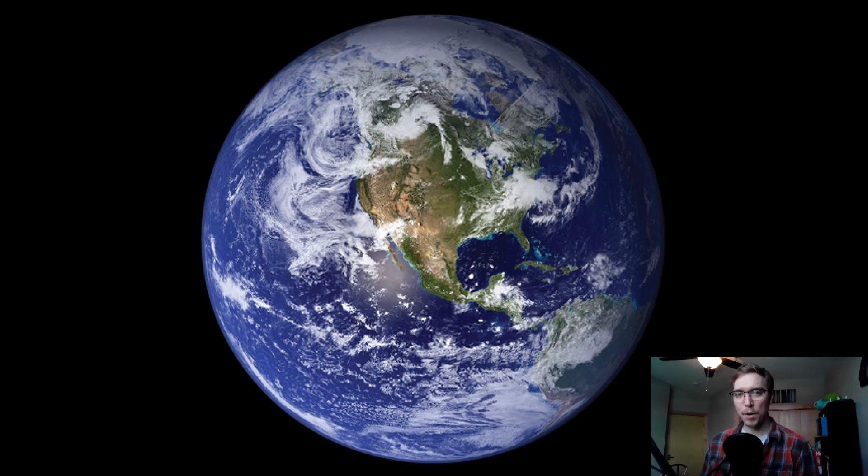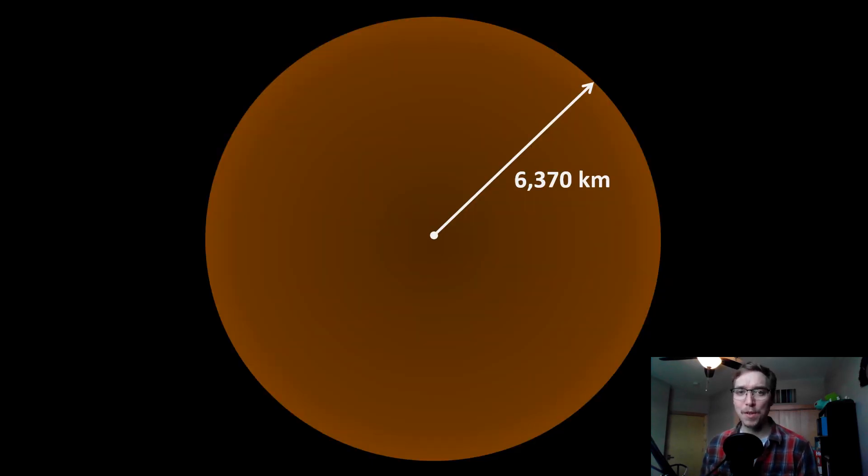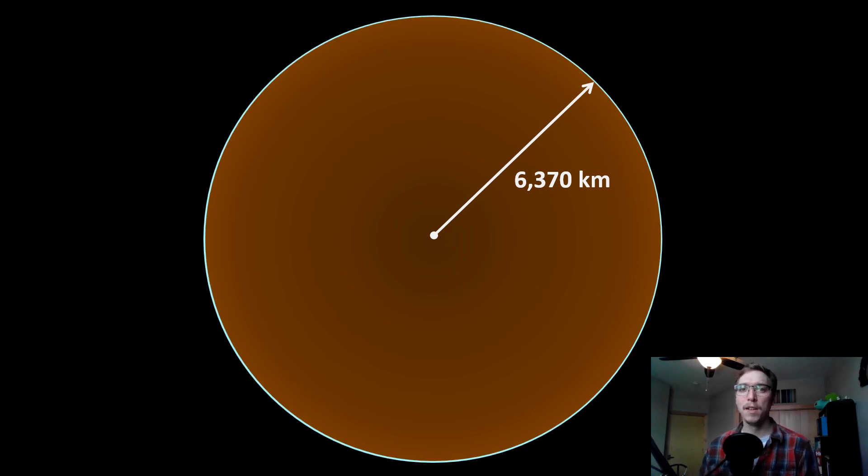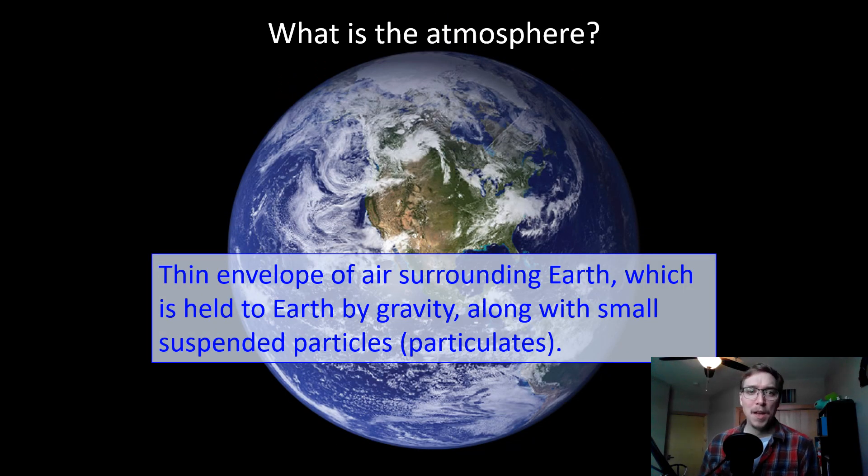To start, Earth is a pretty big place. If we look at the radius of Earth at about 6370 kilometers, if you look at the very edge, that thin veneer is our atmosphere. Then you ask yourself, what is the atmosphere? Well, it is a thin envelope of air surrounding Earth which is held to Earth by gravity, along with small suspended particulates or particles.